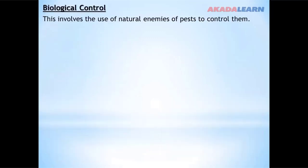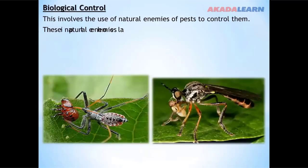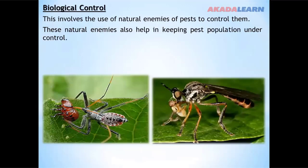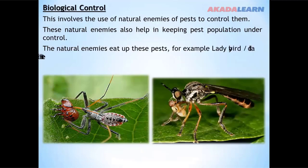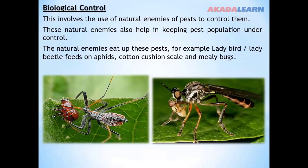Biological control involves the use of natural enemies of pests to control them. These natural enemies help in keeping pest populations under control. For example, ladybugs or ladybird beetles feed on aphids, while praying mantis eat mealybugs.